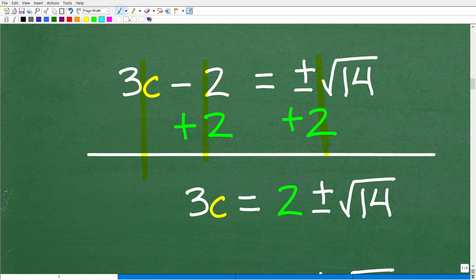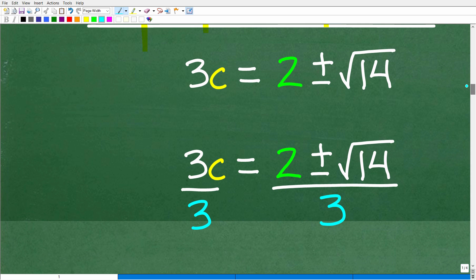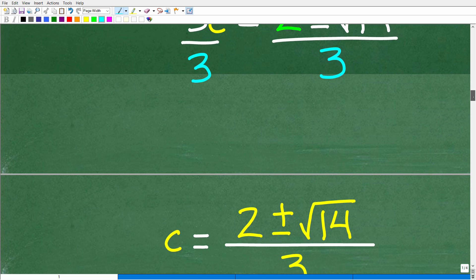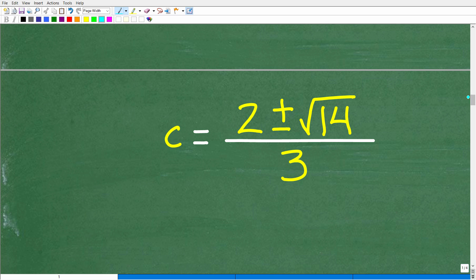If you only write nicely for your math class but are sloppy by yourself, you're creating bad habits. Be structured, neat, and show each step. I'm going to add two to both sides. 3C plus nothing is 3C, negative two plus two is zero, and positive two plus or minus square root of 14. Then divide both sides by three. C equals two plus or minus the square root of 14 over three. This is the correct answer.